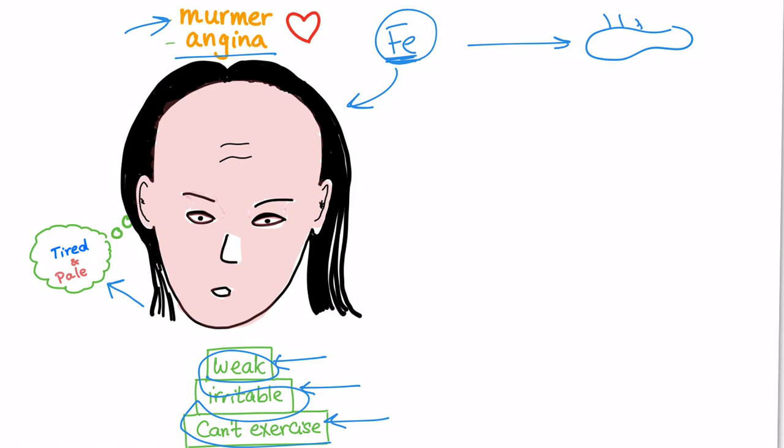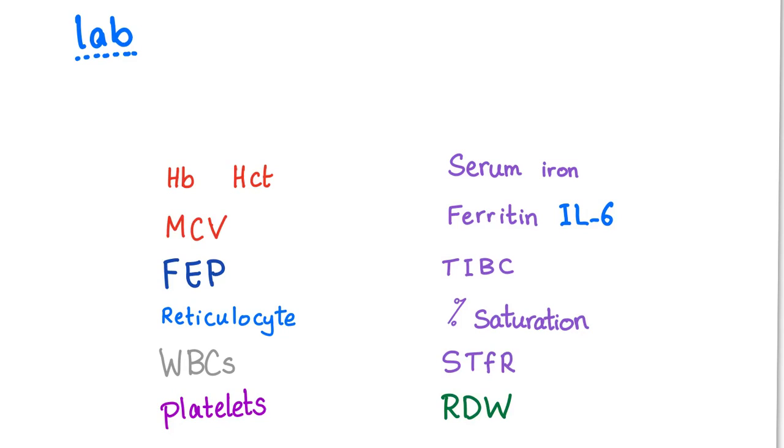And in anemia of chronic disease, we will have the main condition. Be it rheumatoid arthritis, or tuberculosis, or Crohn's disease, or malignancy, or alcoholism, or hospitalization.